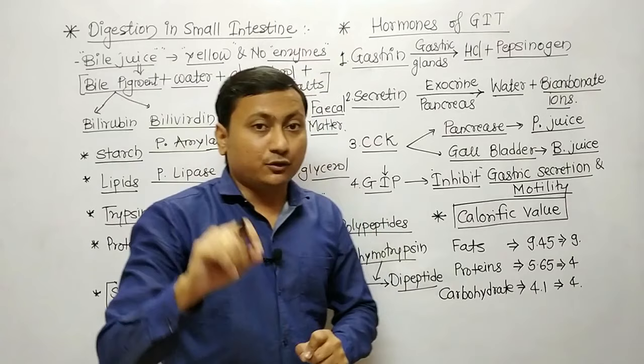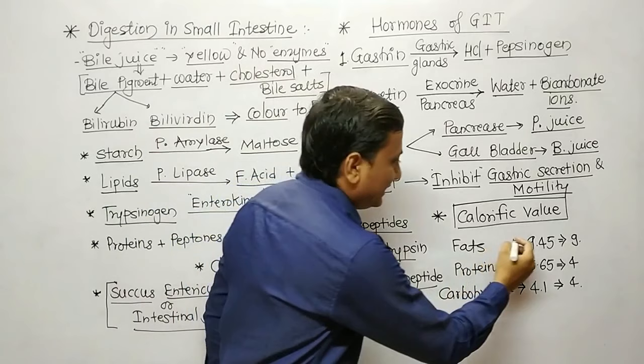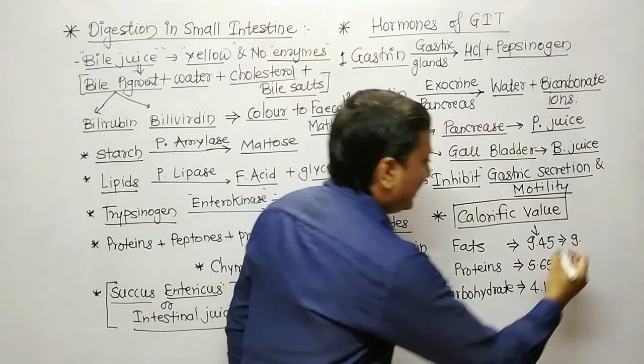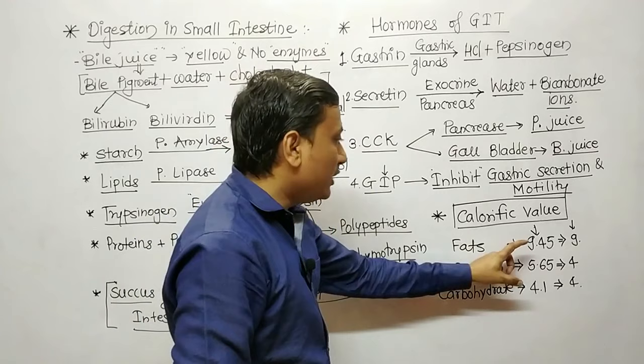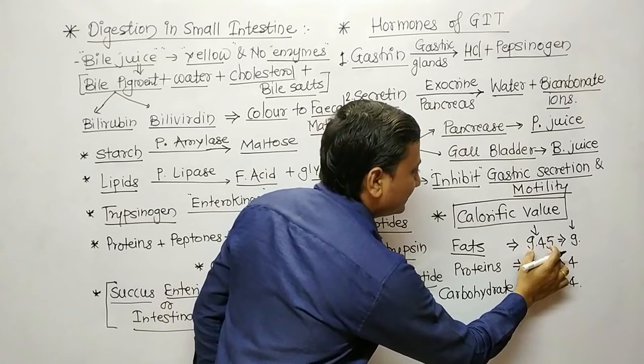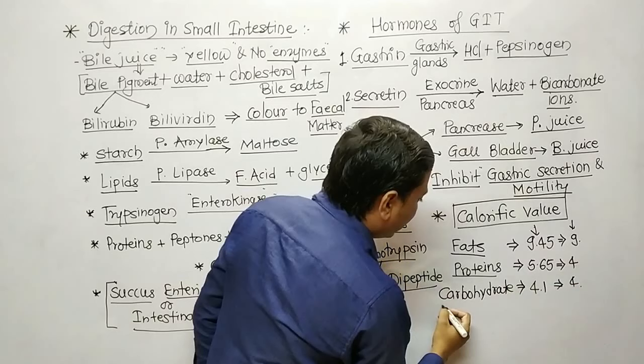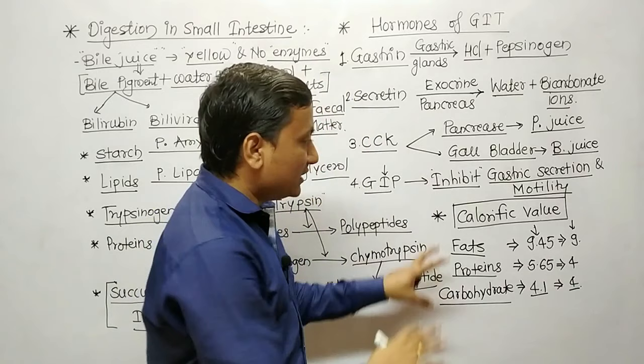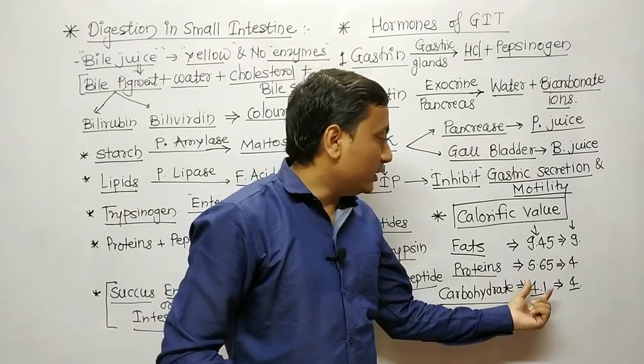An important topic is calorific value. There are two types: gross calorific value and physiological calorific value. For fat: gross calorific value is 9.45 and physiological value is 9. For protein: gross calorific value is 5.65 and physiological value is 4. For carbohydrates: gross calorific value is 4.1 and physiological value is 4. These values must be prepared properly for the MST-CET exam.